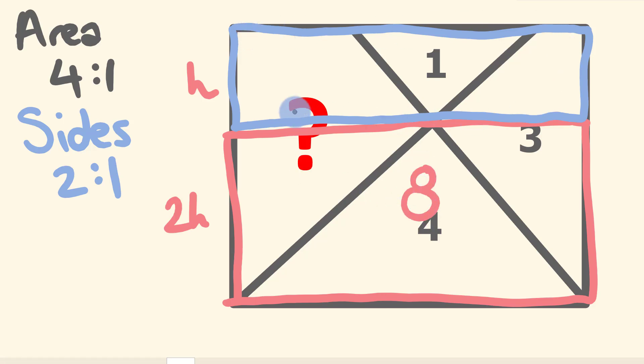For the smaller rectangle up here, we know its area is going to be 4, because it has a height that's half of this one here, but the same length. So simply now what we can do to work out the area of our original rectangle, we can just add these two together. 4 plus 8, we have an area of 12.